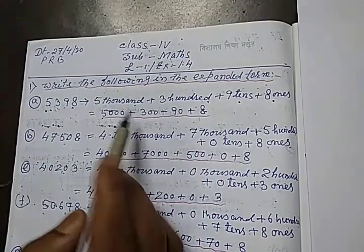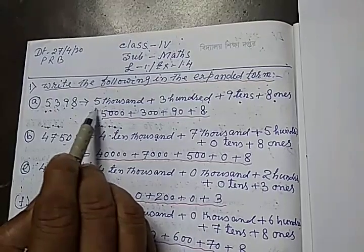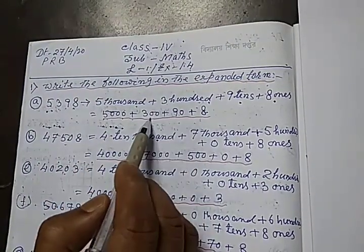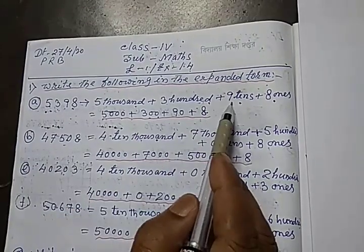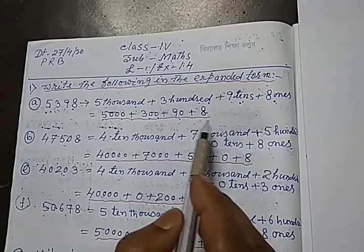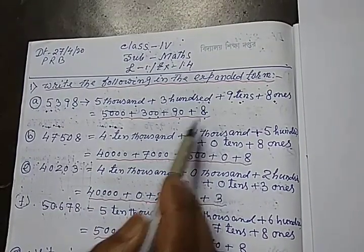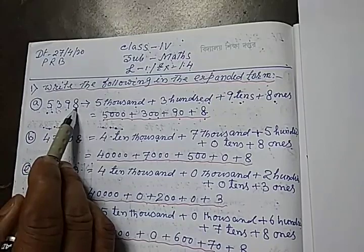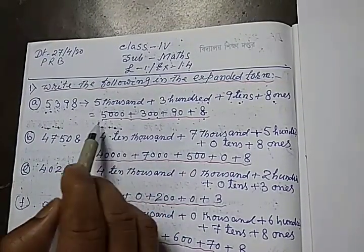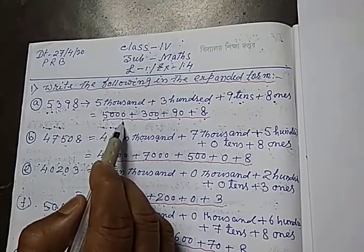So as per their place value, we can write: 5,000 plus 300 plus 9 tens, meaning 9 into 10 equals 90, and 8 ones. So this is the exponent form of 5,398. First write in words, then put the values of each digit as per their place value chart.